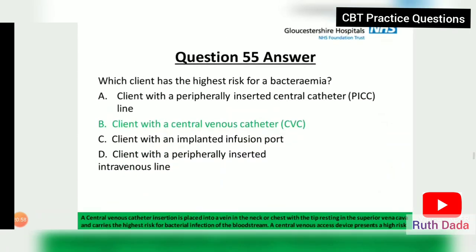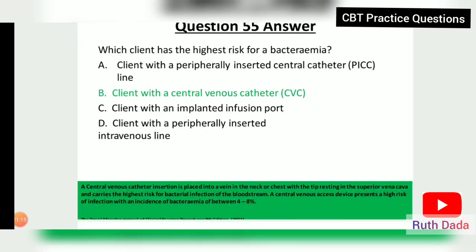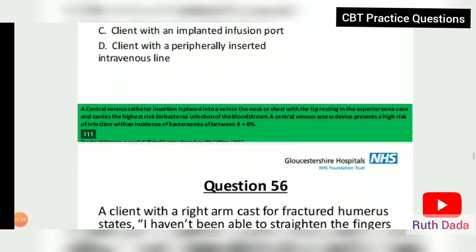Question 55: Which client is at highest risk for bacteremia? A client with a central venous catheter. A central venous catheter is inserted into a vein in the neck or chest with a tip resting in the superior vena cava and carries the highest risk of bacterial bloodstream infection. A central venous access device presents an incidence of bacteremia of between 4 to 8 percent.